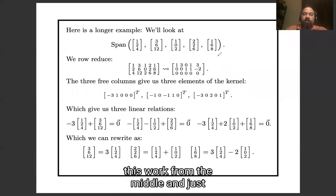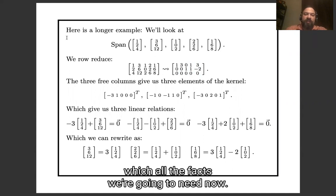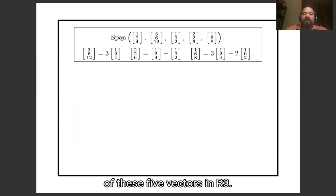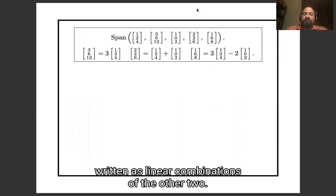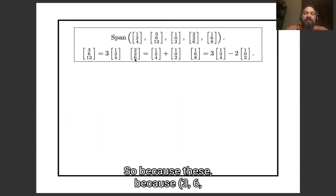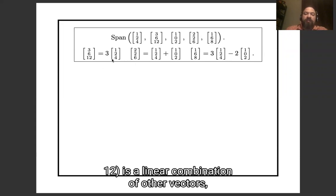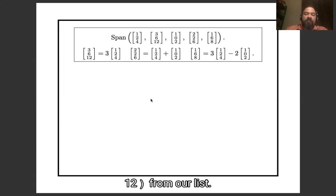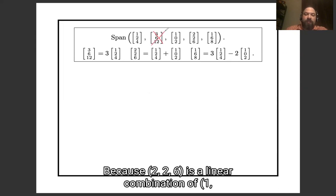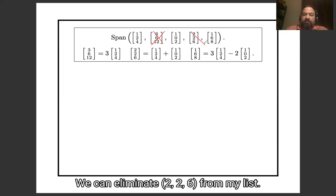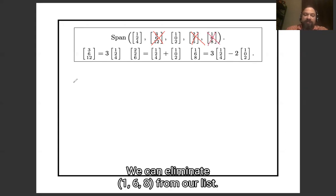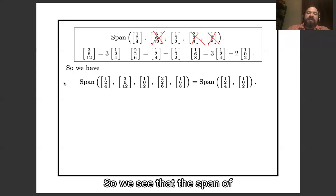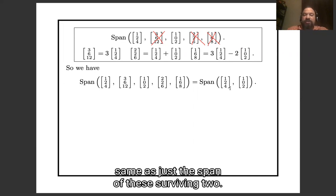On the next slide I'll clear away the middle work and just keep the key facts. We're thinking about the span of these five vectors in R³, and we've noticed that three of them can be written as linear combinations of the other two. Because (3,6,12) is a linear combination of the other vectors, we can eliminate (3,6,12) from our list. Because (2,2,6) is a linear combination of (1,2,4) and (1,0,2), we can eliminate (2,2,6). And because (1,6,8) is a linear combination of (1,2,4) and (1,0,2), we can eliminate (1,6,8). So the span of all five vectors is the same as the span of just the surviving two.